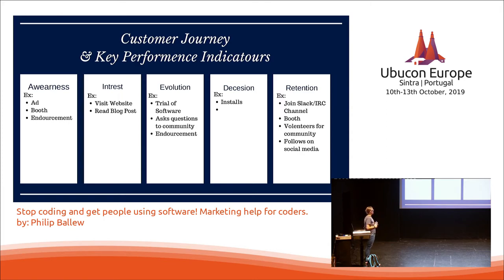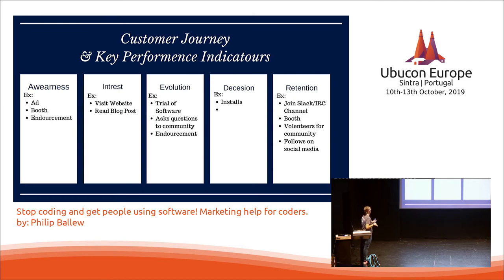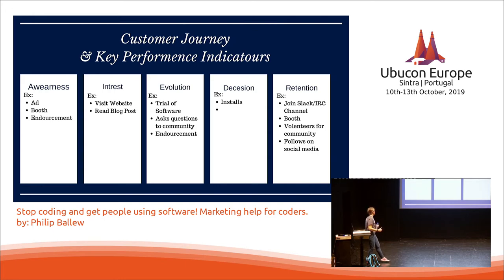Each one of these stages needs key performance indicators — KPIs. When somebody becomes aware of your technical product, you need to figure out technically on your website or at the booth you're running how you can capture that and know they are now in your pipeline. So imagine: awareness — they see the ad or the booth at a festival. Interest — they take the flyer home, they go to your website. From there they read the blog post. You excite, you educate, and then you sell. The evolution comes with the trial of the software.